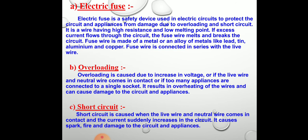The safety devices used in the domestic electric circuit are: electric fuse, MCB, and earth wire. Earthing is done to prevent electric shock. I hope you have understood about overloading, short circuit, and the safety devices and why they are used in the electric circuit. Thank you. If you have any doubts, you can ask.